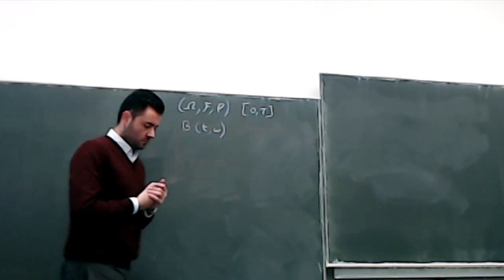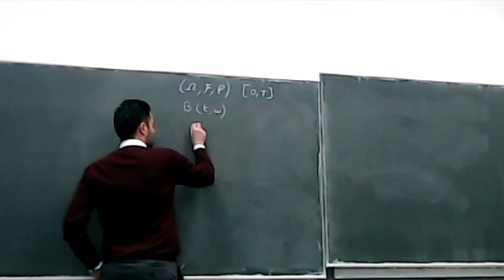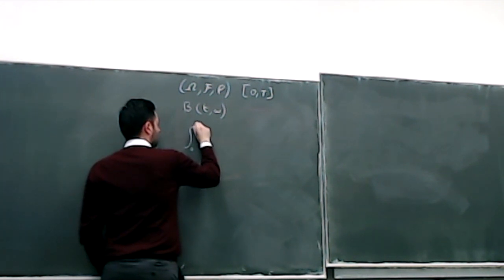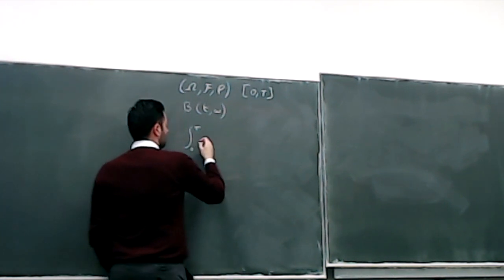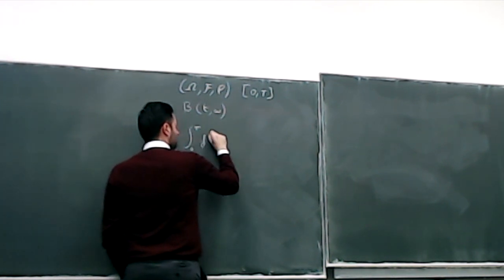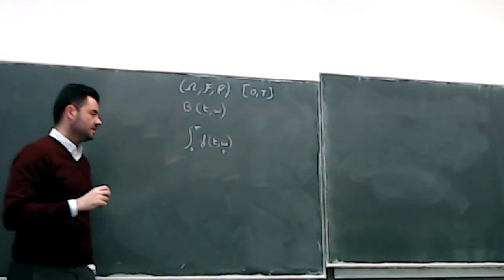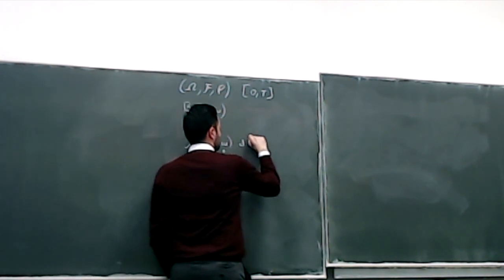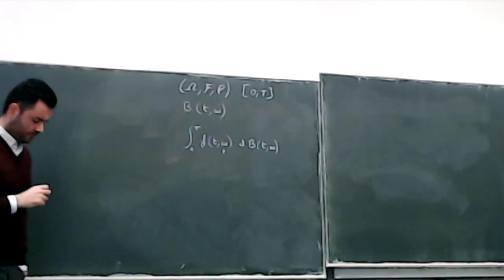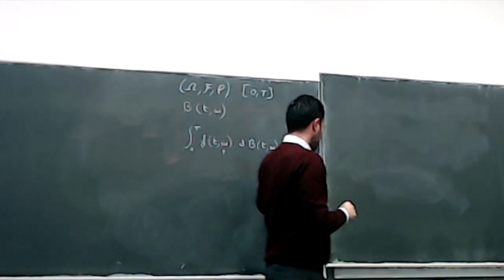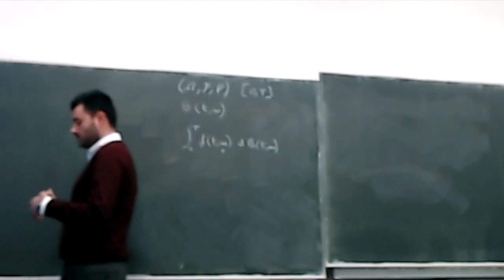So we have this Brownian motion. What we want to be able to evaluate is integrals of this type: the integral from zero to capital T of a function f(t, ω) — where f is possibly a random function — dB(t, ω). This is what I will call the Itô integral, and it is the object I want to define and study.